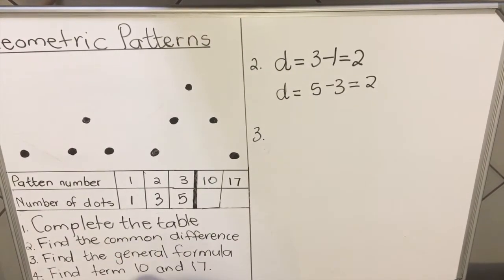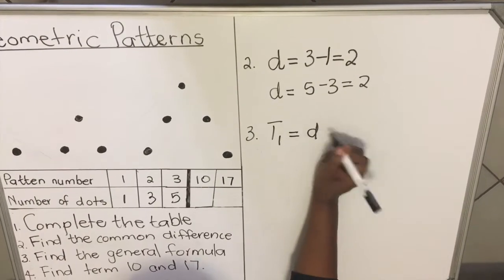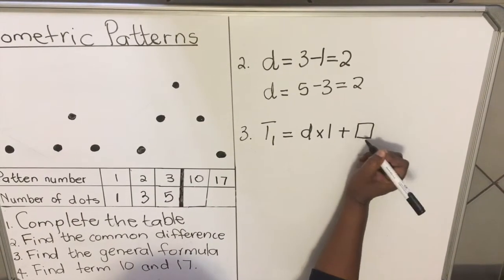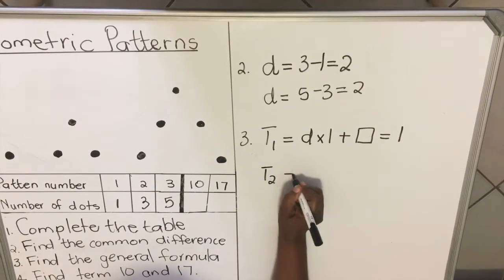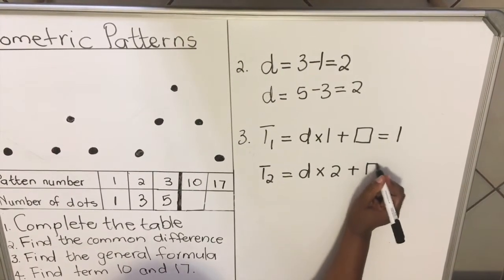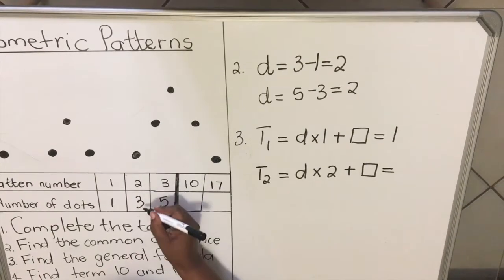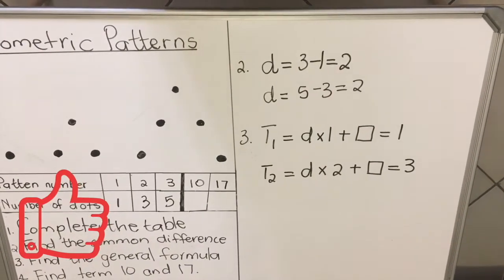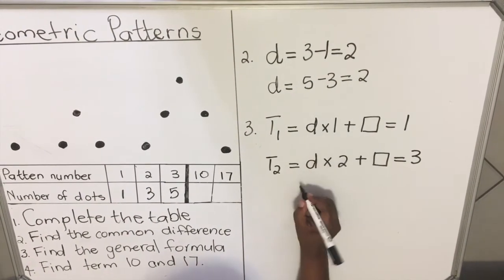For question three, we find the general formula. Take any term — say term one. We multiply the common difference by the term number, then add a particular number to get the value of that term. We try term one: value is one. We try term two: value is three. If that particular number is the same in both cases, we have our general formula.